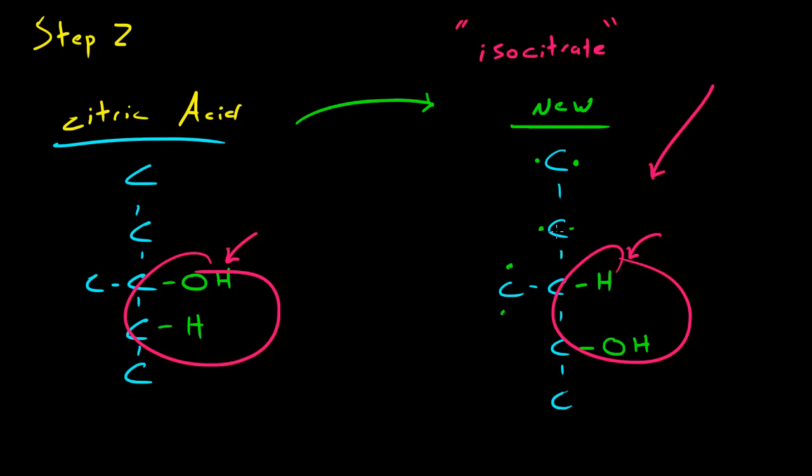So at the end of step number two we have a molecule called isocitrate, and its structure is this right here with a couple other hydrogens and oxygens bonded onto it. So in the next video what I'm going to do is I'm going to start with isocitrate and we take that molecule into step number three of the Krebs cycle.